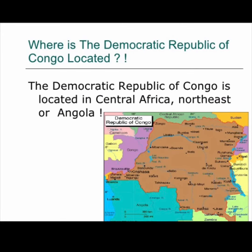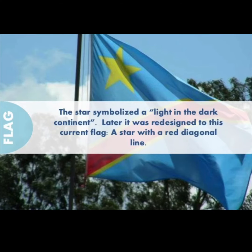The Democratic Republic of Congo is located in Central Africa, northeast of Angola. The national flag of DRC has a star — the star symbolizes a light in the dark continent. Later it was redesigned to the current flag.